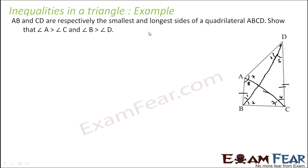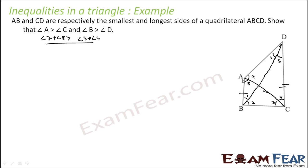So to prove angle A is greater than angle C, this implies: angle 7 plus angle 8 is greater than angle 3. That is what we have to prove. So we know in triangle ABC, AB is the smallest side. The angle opposite to AB is angle 3 — that is the smallest.